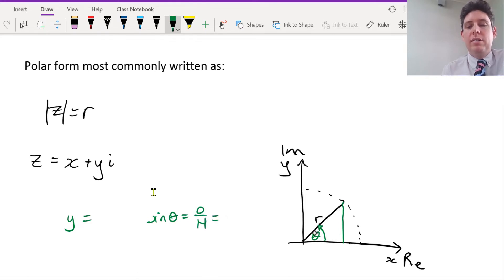The opposite is the y, and the hypotenuse is the radius of the circle. So y can be written as sine theta times r.